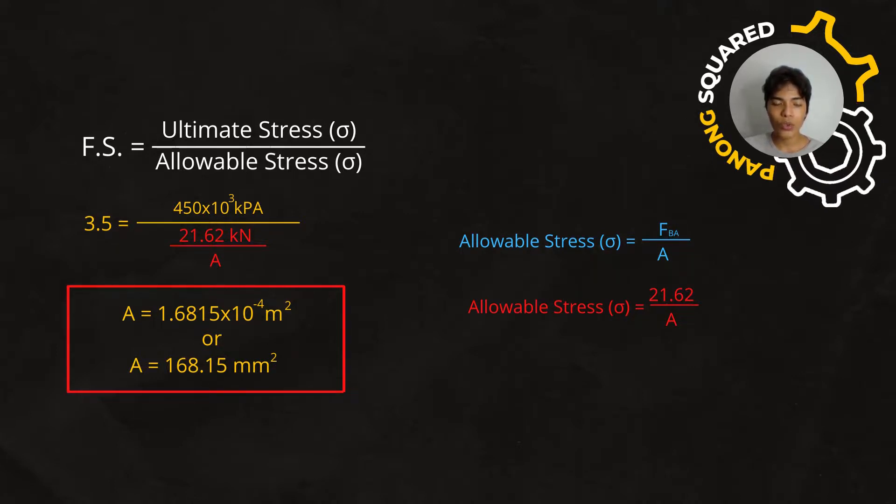Or equal to 168.15 millimeters squared. Therefore, the cross-sectional area of AB is equal to 168.15 millimeters squared.